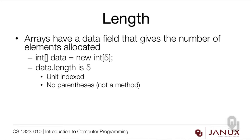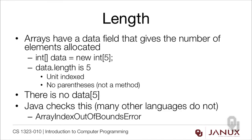This is kind of a nuanced point — don't worry too much about making mistakes like this on tests. The other thing to remember is there is no data[5] for a five-element array. Remember the five in data[5] is the index, and indices are zero indexed, whereas length is unit indexed. This drives you crazy at first, but you do get used to it after a short period of time. Now Java does check to make sure that you're not going over the end of the array. This is very nice for beginning programmers, because one of the hardest mistakes to find is stepping over the end of the array. If you do happen to do this accidentally, you'll see an ArrayIndexOutOfBoundsException.